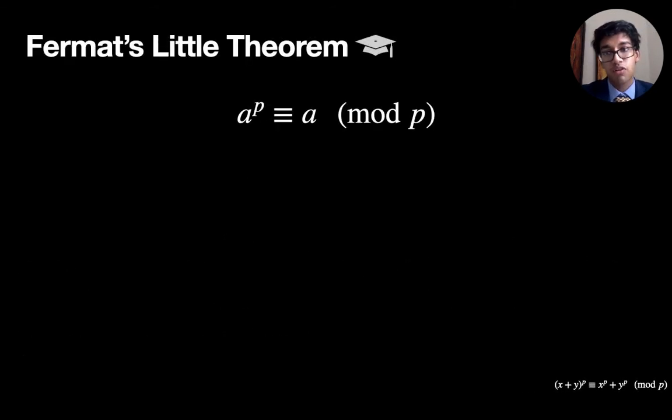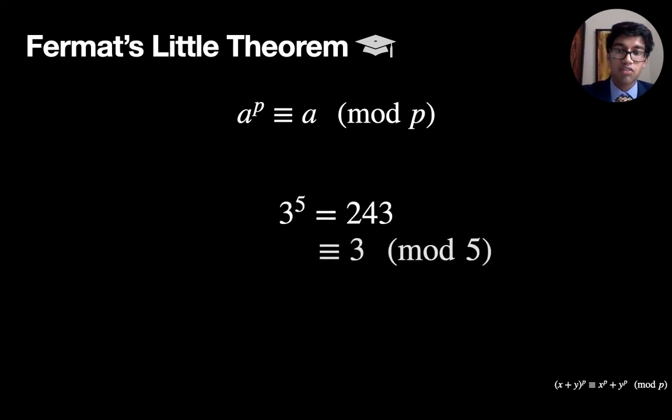From this, we can then derive Fermat's little theorem, so-called to distinguish it from Fermat's big last final theorem. What Fermat's little theorem says is that if you have a positive integer and raise it to the power of a prime number, you'll get the original number back as the remainder after division by p. So as an example, you might have three to five, that's 243. And that's obviously got a remainder of three after division by five.